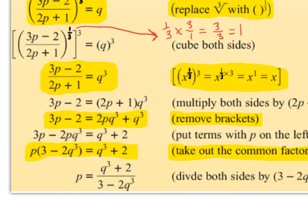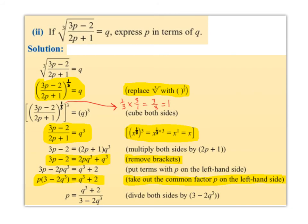So now we have p on its own. To summarize what we did: we replaced the cube root with the power of one third, then cubed both sides, then multiplied both sides by (2p plus 1), removed the brackets, put the terms with p on the left-hand side, took out the common factor p on the left-hand side by factorizing, and then divided both sides by (3 minus 2q cubed). And we've got p on its own — so p is now the subject.